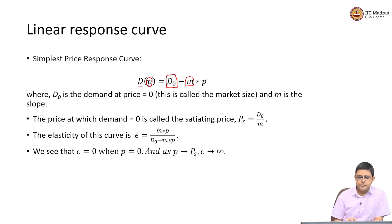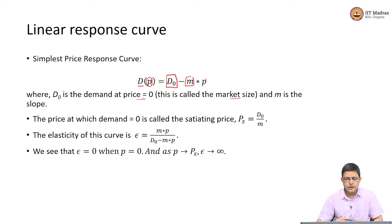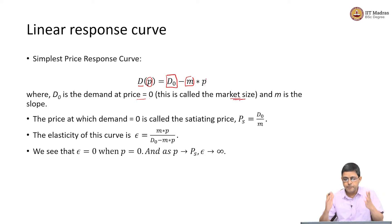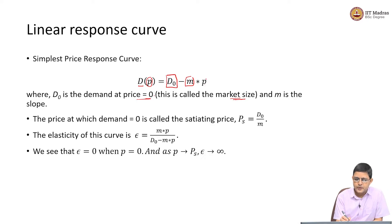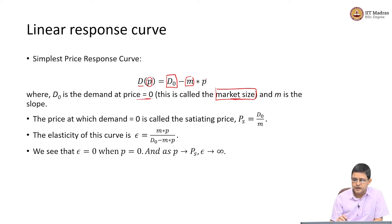D0 is called the demand at price 0. When P is 0, the demand is D0. This can also be called the market size, because when you are offering the product for free, how many people actually demand this product will really tell you the total market size. Price equal to 0 is really the minimum price, and the demand at that price is called the market size. M is called the slope.